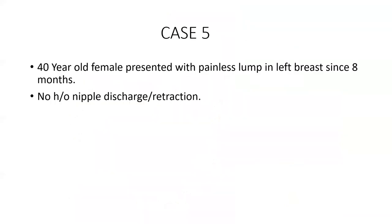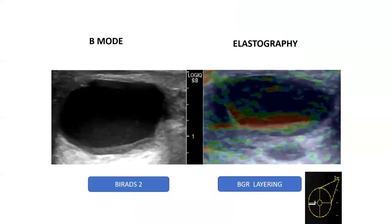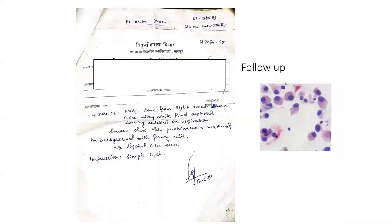Case 5: a 40-year-old female presented with a painless lump in the left breast with no history of nipple discharge or retraction. Ultrasound showed a well-defined round to oval hypoechoic to anechoic cystic lesion with posterior acoustic enhancement at the 9 o'clock position in the left breast, with no adjacent features, appearing wider than taller. On elastography, it showed a blue-green-red flaring pattern, typical of a cystic lesion. FNAC confirmed a simple breast cyst.